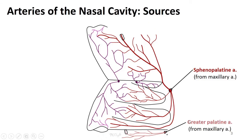Another branch from the maxillary artery is the greater palatine artery, also from the area of the pterygopalatine fossa. This will course on the hard palate. For the most part it is not that large of a supply for the nasal cavity, but it does communicate with the septal branches through the incisive canal.